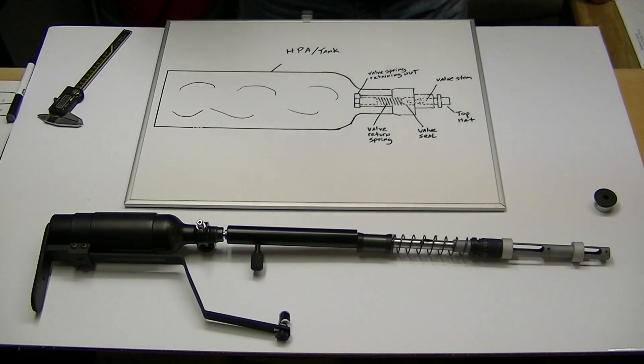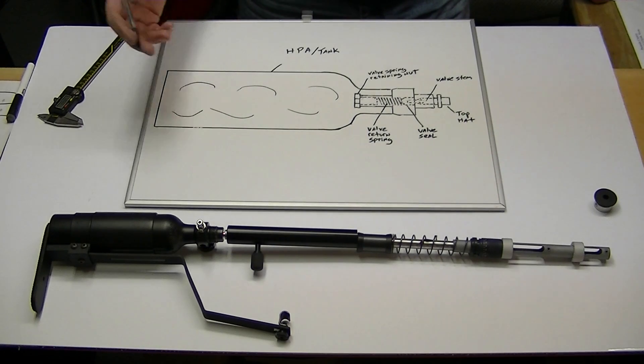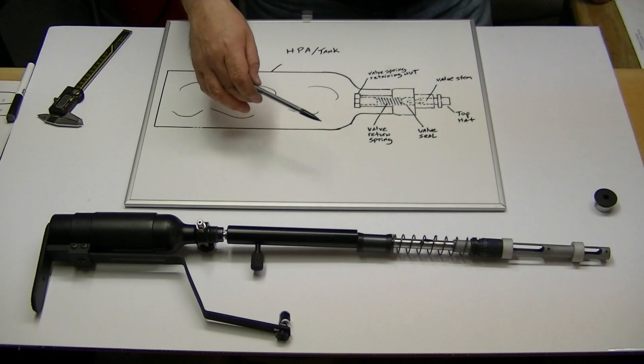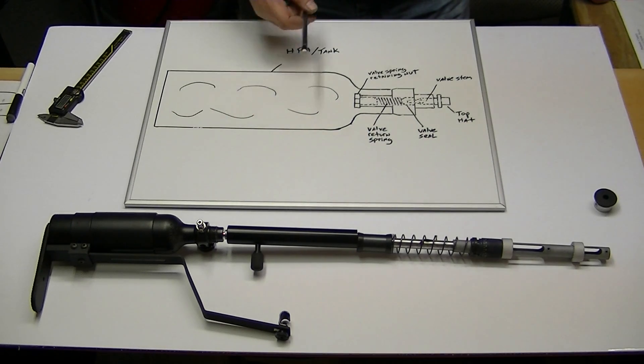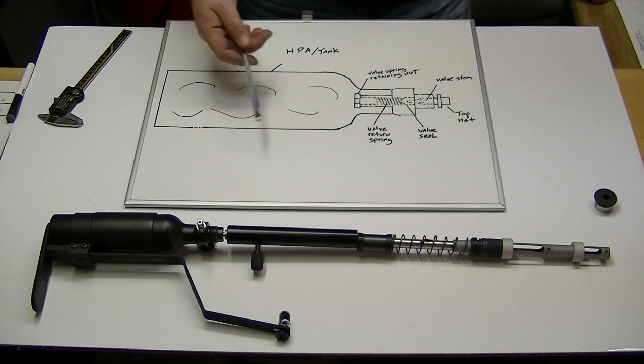Now, whenever you first get one of these Air Force air guns, the first thing that you're going to do is fill your tank up. Whether it's a 13 cubic inch tank like this one here, the smaller one, or the larger standard size tank, they're both going to be rated for 3,000 PSI. Most people are going to want to fill that up to the 3,000.